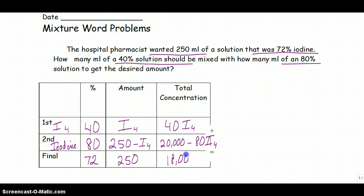So if I add how much of the 40% solution to how much of the 80% solution, I'm going to get my final solution. So now I'm just going to go through and do the math. So 40I sub 4 plus 20,000 minus 80I sub 4 is equal to 18,000.